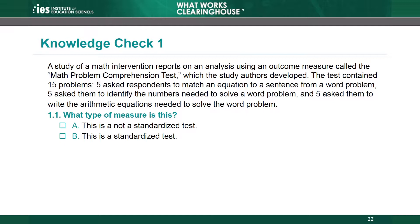Knowledge Check 1. A study of a math intervention reports on an analysis using an outcome measure called the Math Problem Comprehension Test, which the study authors developed. The test contained 15 problems: five asked respondents to match an equation to a sentence from a word problem, five asked them to identify the numbers needed to solve a word problem, and five asked them to write the arithmetic equations needed to solve the word problem. What type of measure is this?